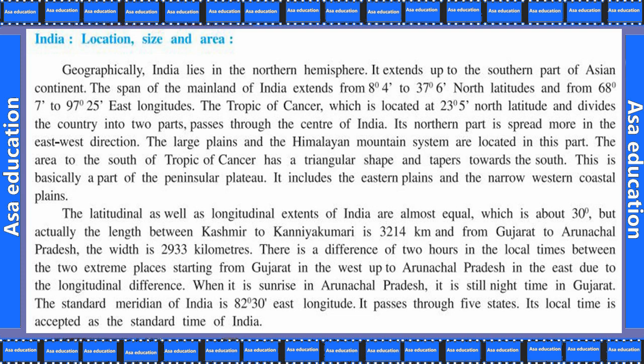There is a difference of 2 hours in local times between the two extreme places — from Gujarat in the west to Arunachal Pradesh in the east — due to the longitudinal difference. When it is sunrise in Arunachal Pradesh, it is still night time in Gujarat. The standard meridian of India is 82°30' east longitude, and it passes through 5 states. Its local time is accepted as the standard time of India.